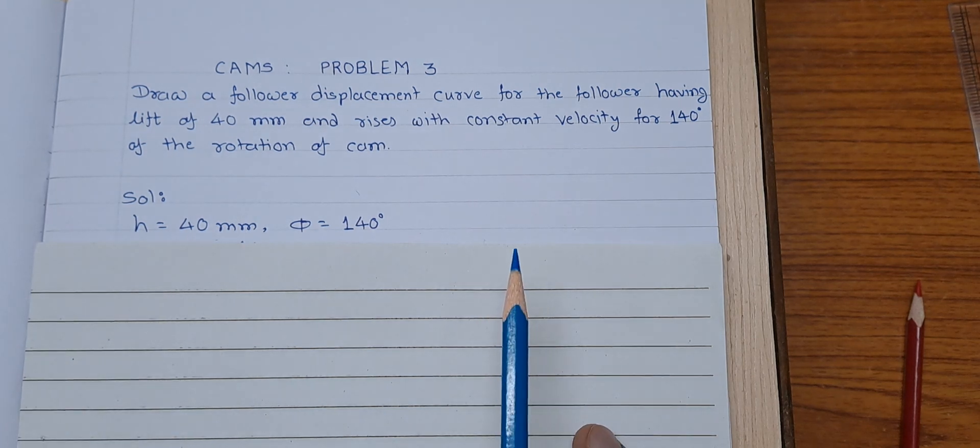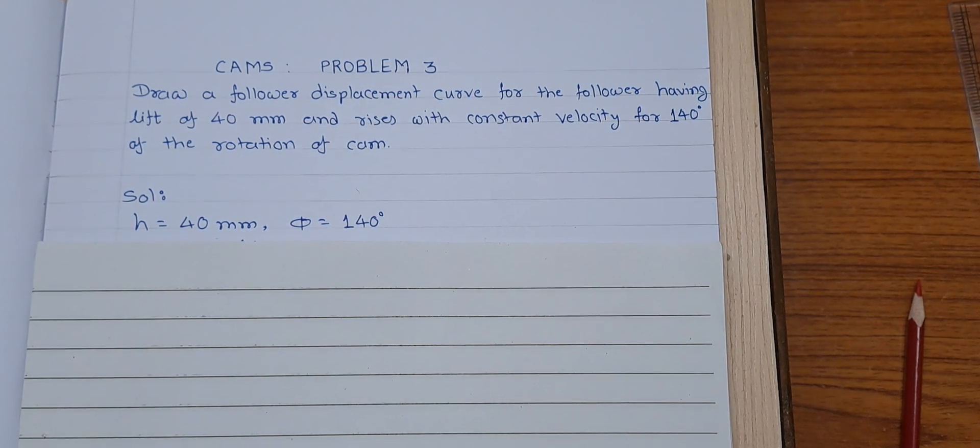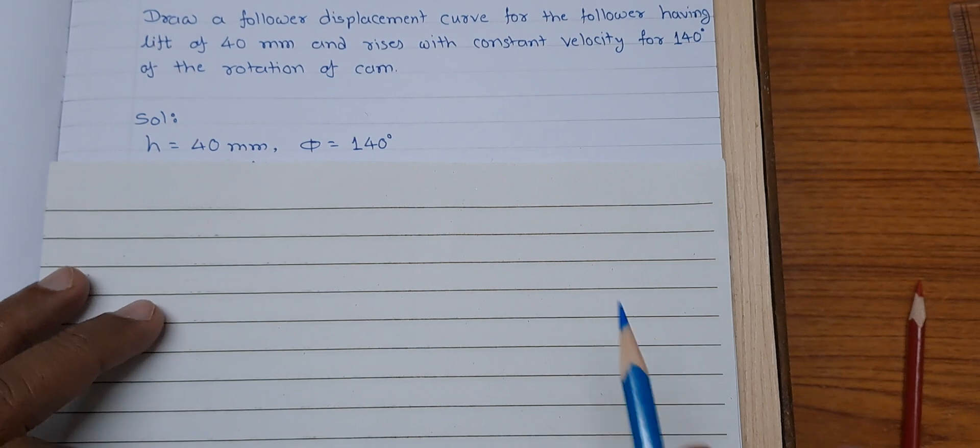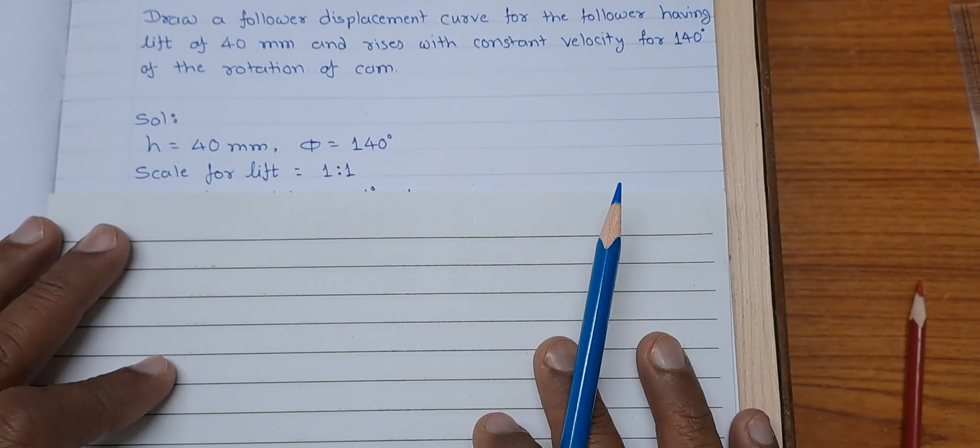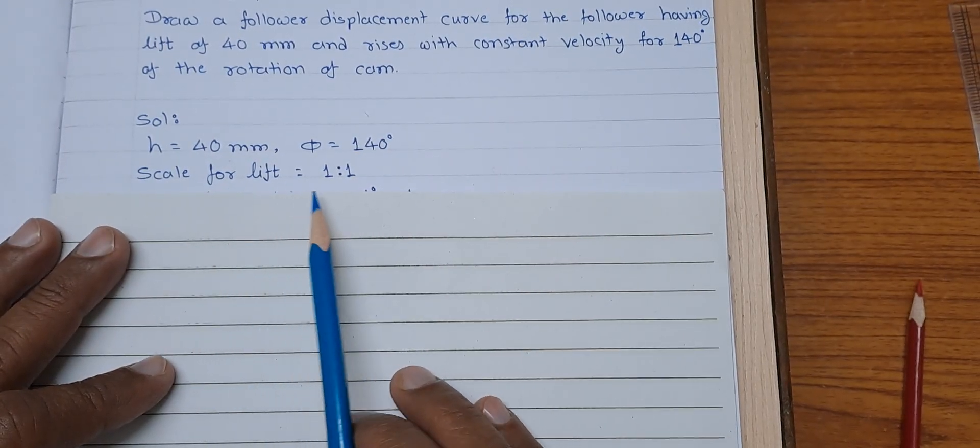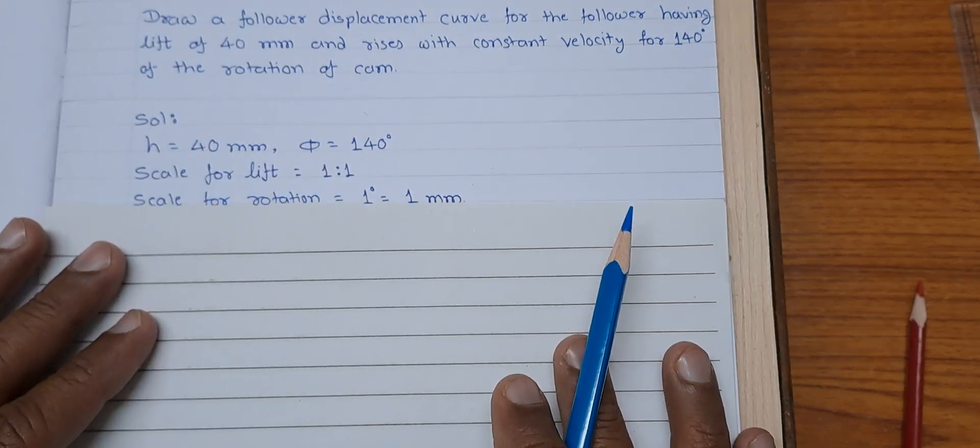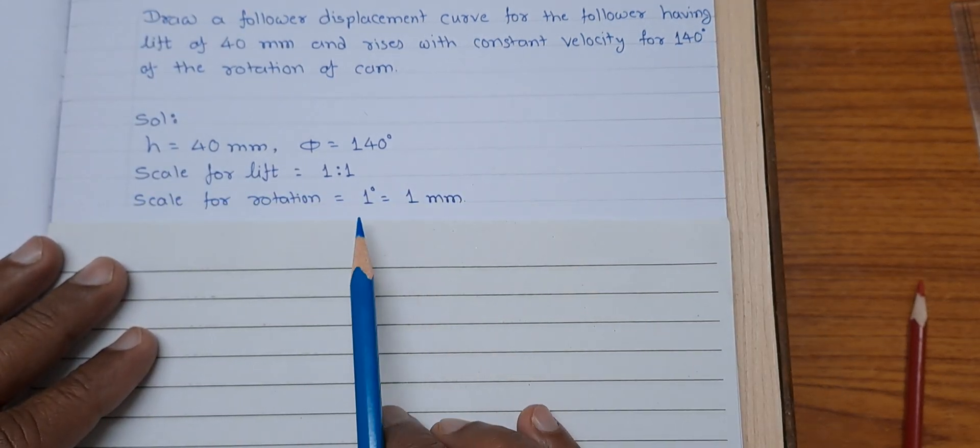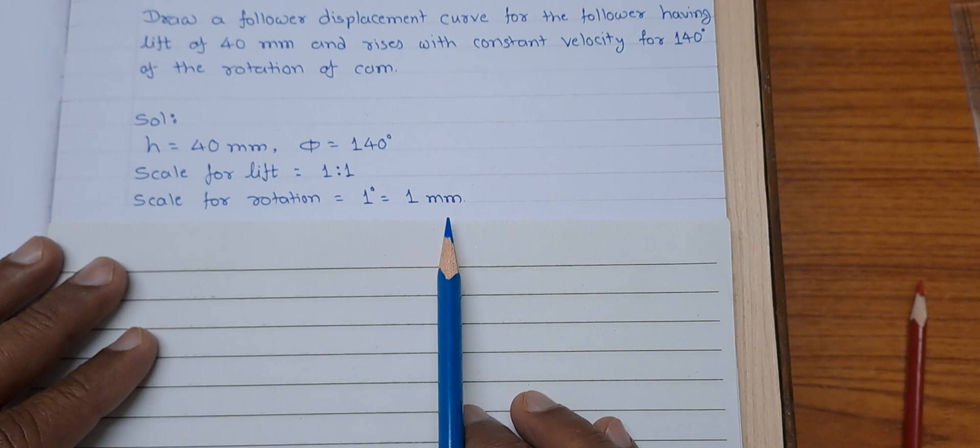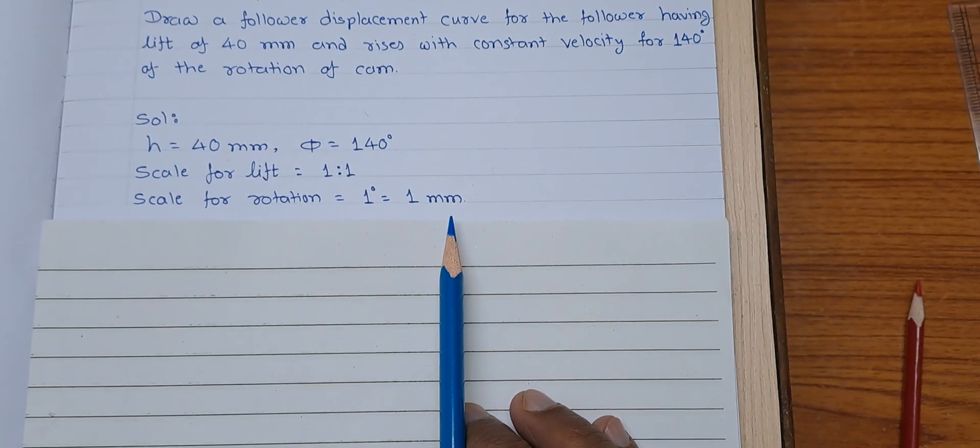So, to draw the displacement diagram, let us consider some scale. We take scale for the lift is 1 to 1 and scale for the rotation is 1 degree equal to 1 mm.